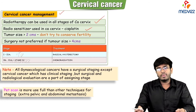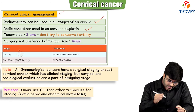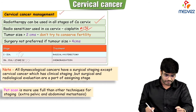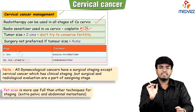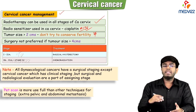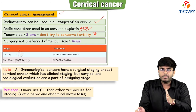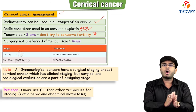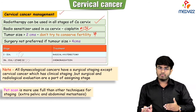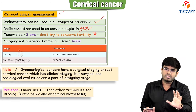When giving radiotherapy, you should give a radiosensitizer to increase receptivity to radiation. The radiosensitizer used in cancer cervix is cisplatin — this is an important MCQ. If the tumor size is more than 2 centimeters, do not think about conserving the patient's fertility. Management depends on whether the female desires future fertility.